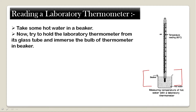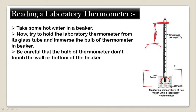The laboratory thermometer needs to be placed vertically on the glass side or put it in a stand. The bulb needs to be dipped into the substance whose temperature we want to measure. The third step: be careful that the bulb of the thermometer does not touch the wall or bottom of the beaker. When using the laboratory thermometer, we must keep the bulb from touching the bottom or wall — otherwise the temperature reading will be wrong.